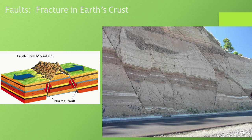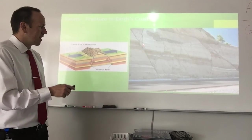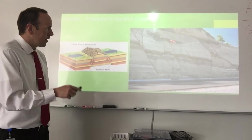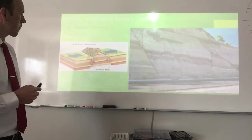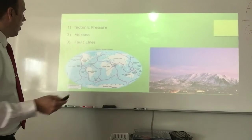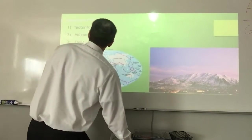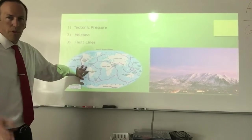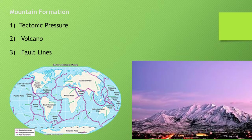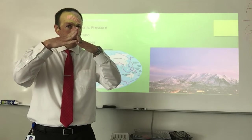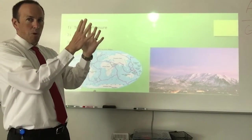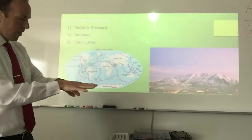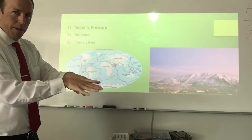What is a fault? It's a fracture in the Earth's crust. These are faults. Mountain formation — different ways the mountains can be formed. In the Earth there are different tectonic plates. The tectonic plates can bump into each other and make a mountain. A volcano can erupt. And then the fault lines — you can have the slipping of the faults.